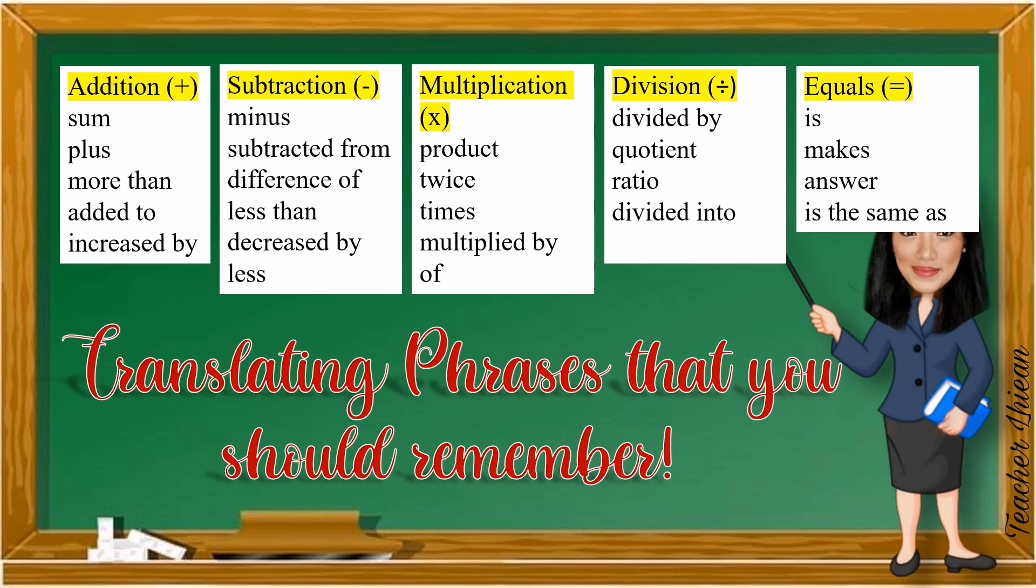And here are the keywords again in translating phrases that you should remember. In addition, we have sum, plus, more than, added to, increased by. In subtraction, we have minus, subtracted from, difference of, less than, decreased by, less. In multiplication, we have product, twice, times, multiplied by, of. In division, we have divided by, quotient, ratio, divided into. And in equals, we have is, makes, answer, is the same as.